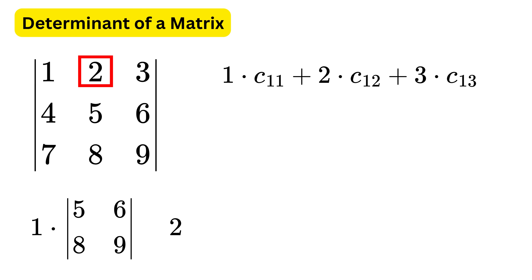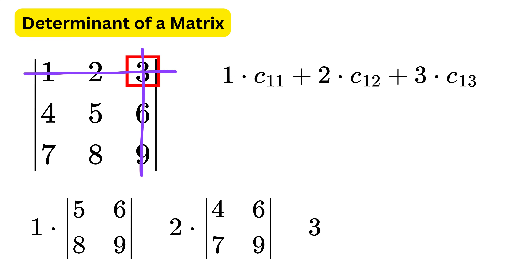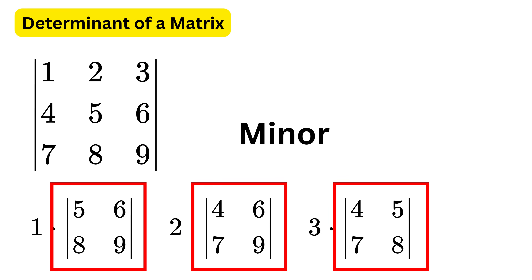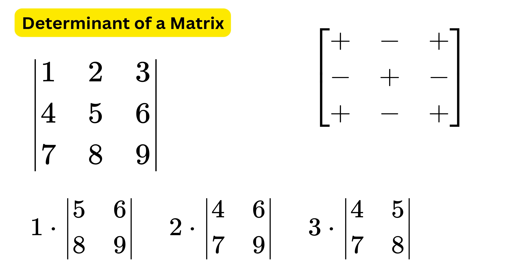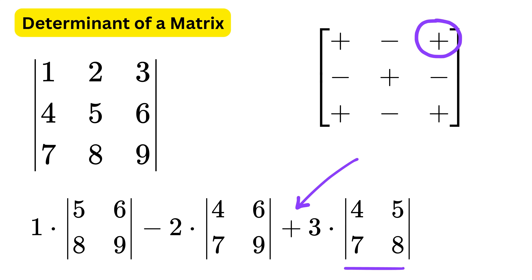Now take the second element of this row, which is 2. Remove the first row and second column, and find the determinant of the smaller matrix formed. Then take the third element, which is 3, and remove the first row and third column, and find the determinant of the smaller matrix formed. These determinants are the minors of these elements. In order to find the cofactor, we need to multiply by 1 or minus 1. Looking at the checkerboard pattern: we have a plus for the first, a minus for the second, and a plus for the third.